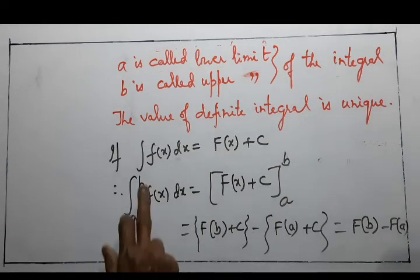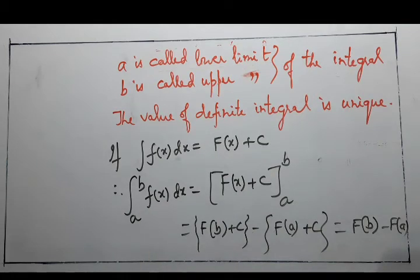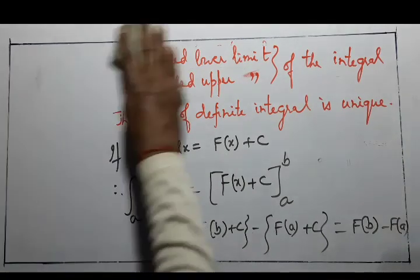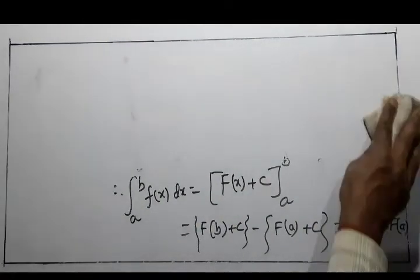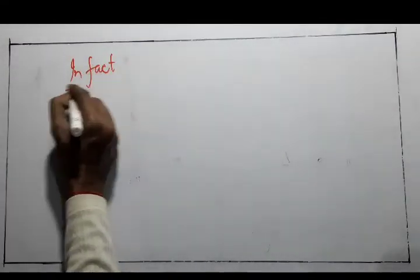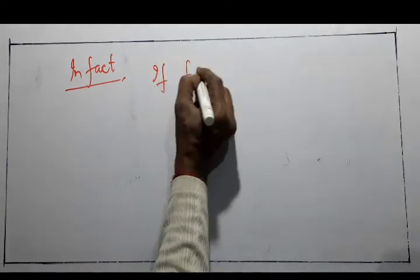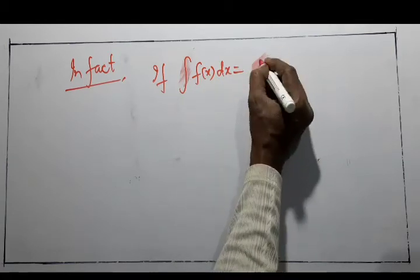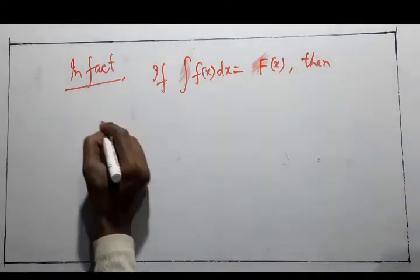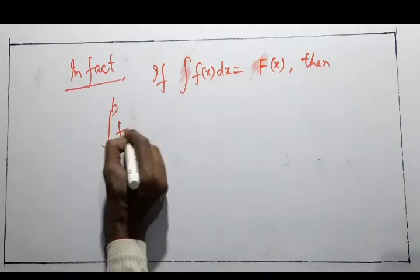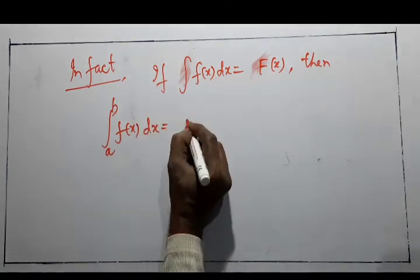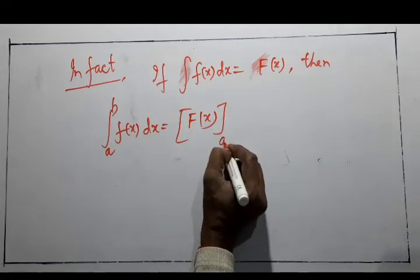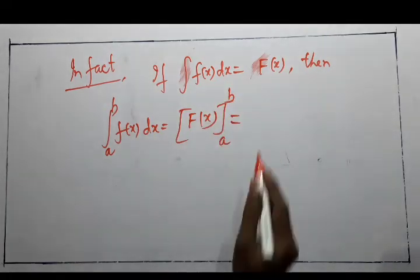So the indefinite integral gives different functions for different constants, but the definite integral value is fixed. In fact, if ∫f(x)dx = F(x), then ∫(a to b) f(x) dx = [F(x)] from a to b. Since the function is continuous, we can directly substitute values at the limits.